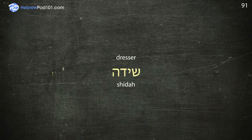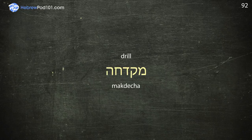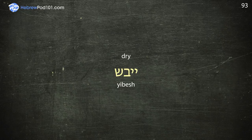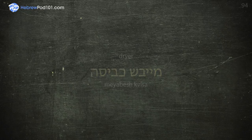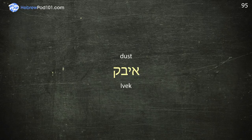Drill — Magdecha. Dry — Yibish. Dryer — Meyibish Kvisa. Dust — Yibik. Dust cloth — Smertut.